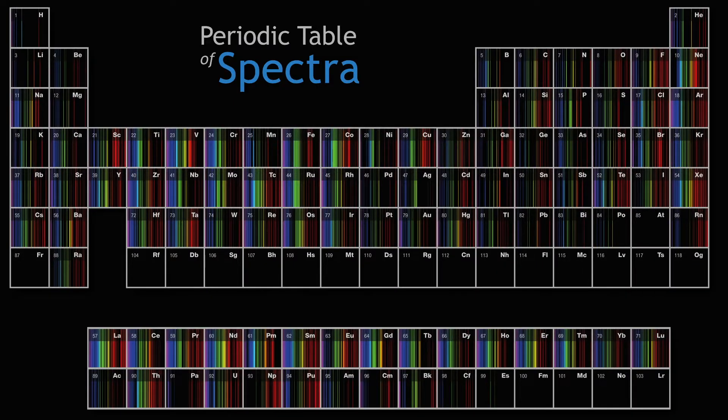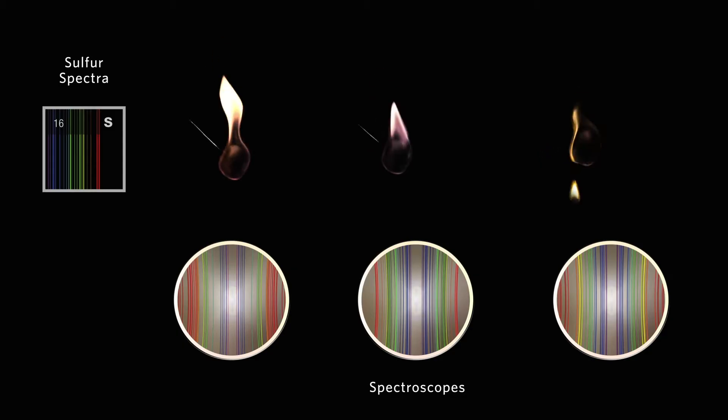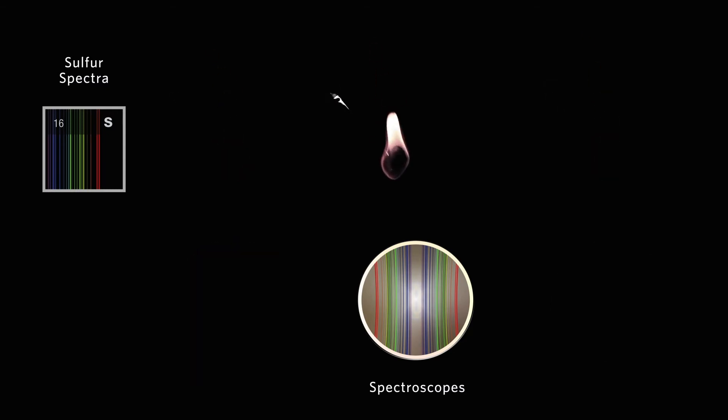Other elements, when burned, give off different patterns. When you know the pattern of the colors, you can identify the element. Let's test this out. Which flame is burning sulfur? This one is the sulfur.